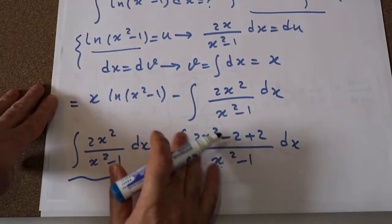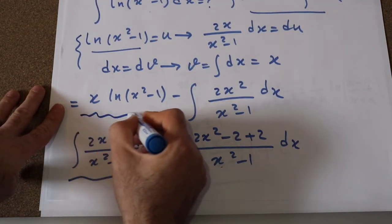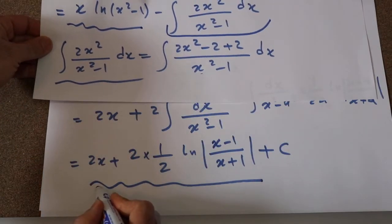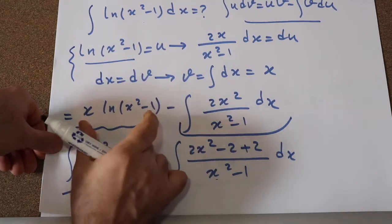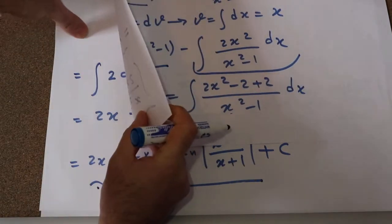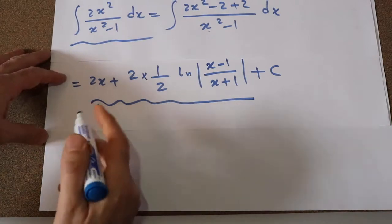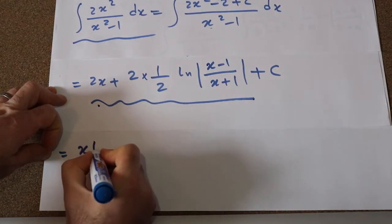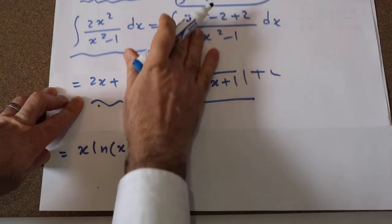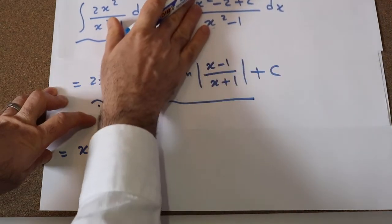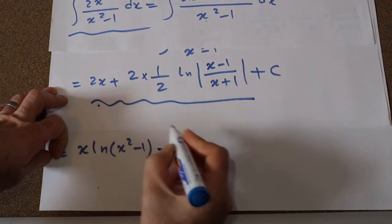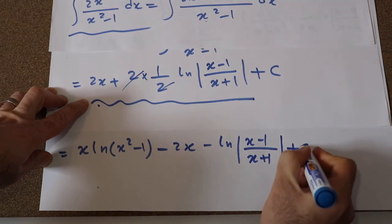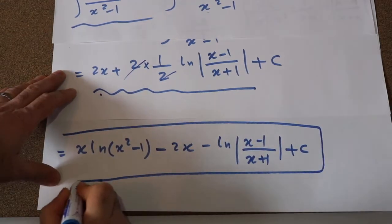So remember, the original integral of ln(x² - 1) dx was equal to x·ln(x² - 1) minus the integral of that term. We just calculated that integral, so the solution to the original question is x·ln(x² - 1) minus 2x minus ln|(x - 1)/(x + 1)| plus c, where c is the constant of integration. And this is the solution to our integral.